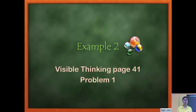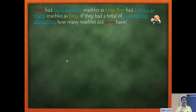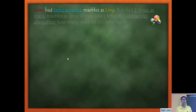Let's move on to Example 2 from Visible Thinking page 41, Problem 1. Read the question on your own. What do we know? We have three people: Jerry, Ling, and Ben. Jerry has twice as many as Ling. Ben has 3 times as many as Ling. The total is 144 marbles. We want to find out how many marbles Jerry has. Let's draw the model line by line.